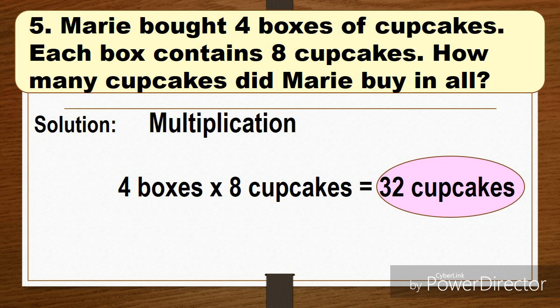Okay, Marie bought 4 boxes of cupcakes. Each box contains 8 cupcakes. How many cupcakes did Marie buy in all? So the solution is, we'll multiply the 4 boxes of cupcakes by 8 cupcakes. So 4 boxes times 8 cupcakes is equal to 32 cupcakes. So that's the total number of cupcakes Marie bought.